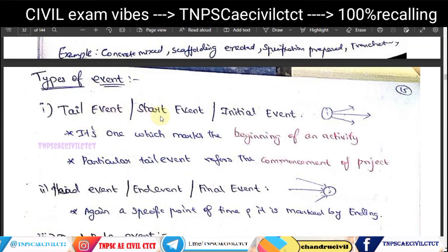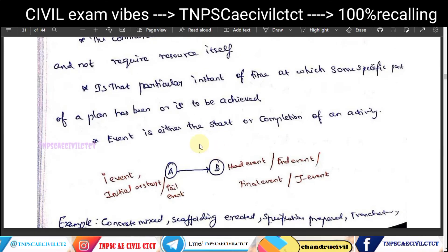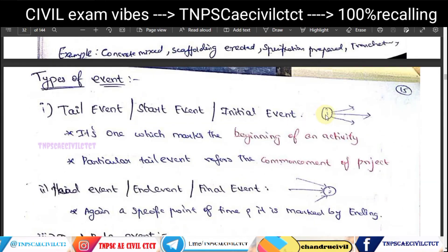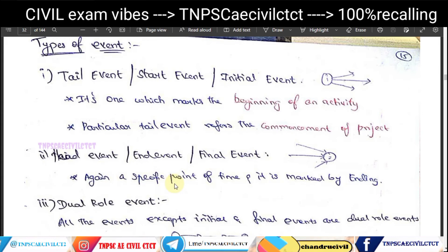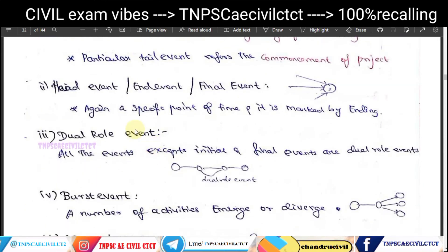The first type is the tail event, also called the start event or initial event — this is where the activity begins and a node is created. The second type is the head event, also called the end event — it represents a specific point in time where the activity ends.